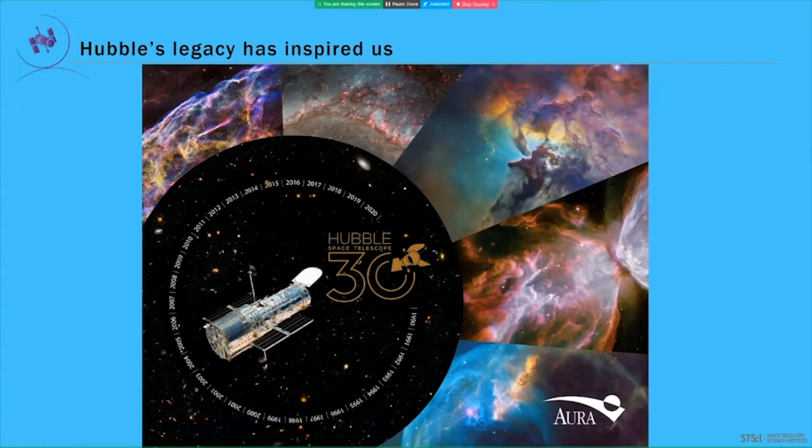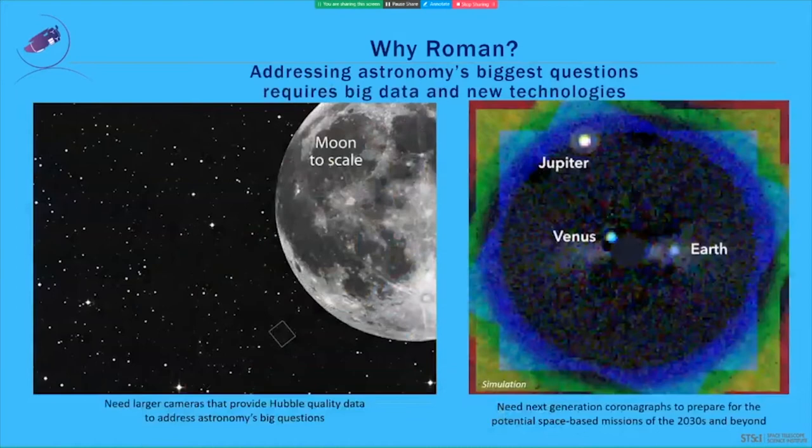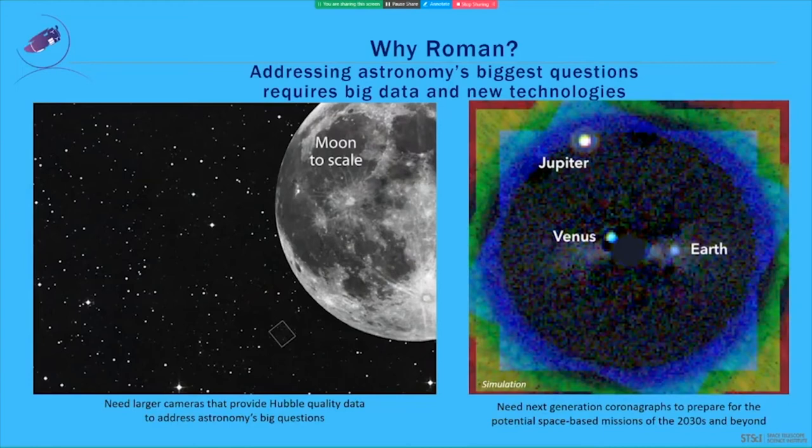So why Roman? Well, the future of astrophysics lies in accumulating large quantities of high quality data and in new technologies. Take a look at the image on the left. The little box next to the full moon is the area of the sky Hubble can observe at any given time. It is also called the field of view. It would take over 150 of these individual Hubble observations to cover the full moon. The reality is that many of astronomy's biggest mysteries can only be solved with lots of data. We need larger cameras on large space-based telescopes to collect that data.